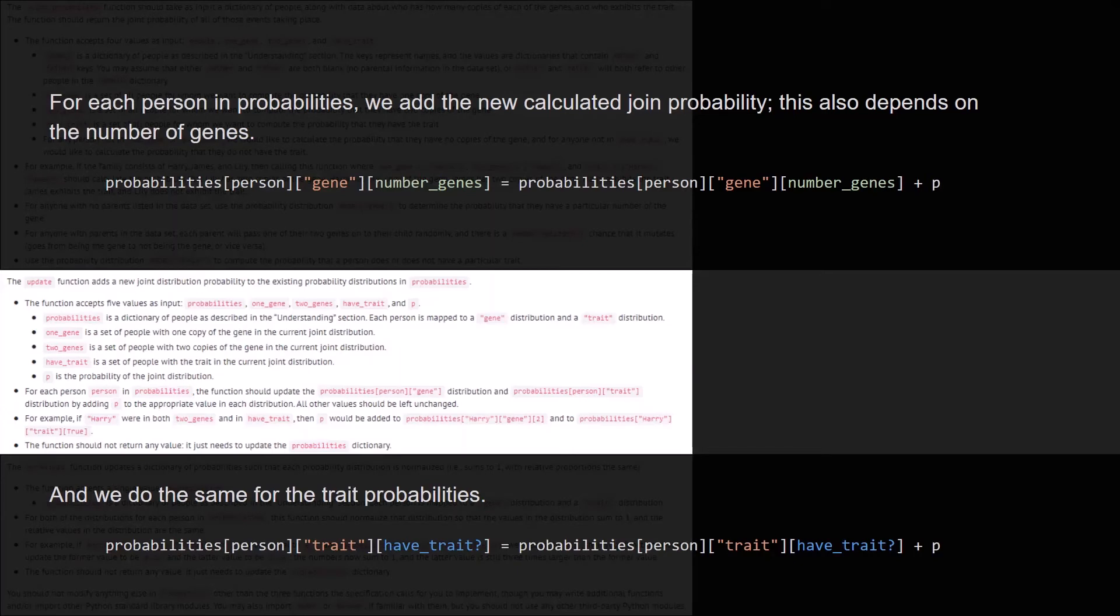Then we have the update function. So for each person in probabilities, we add the new calculated joint probability. This also depends on the number of genes, so in this case we have the person, the gene, and depending on the number of genes, we add the new joint probability, which is represented by the p variable. And we do the same for the trait probabilities, so depending if the person has the trait or not, we add the p joint probability.